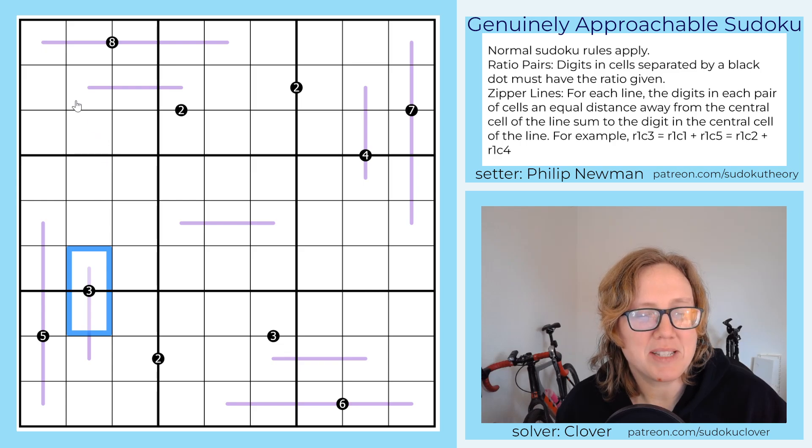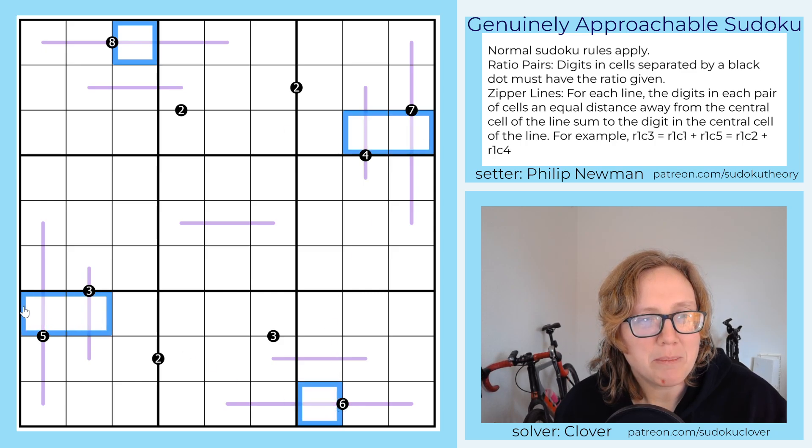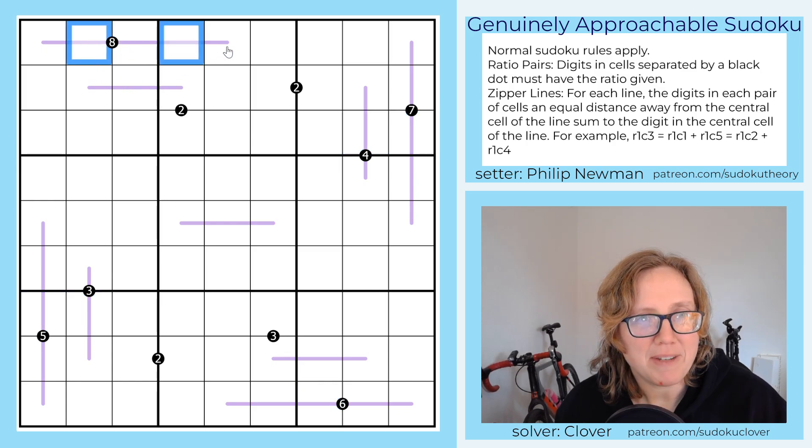And finally we have zipper lines. So there's some lines in the grid that are of odd length, and if you look at the central cell, whatever number goes into that central cell has to also equal the sum of each pair of digits that are the same distance away from it. So for instance, whatever goes here has to be the sum of these, and it also separately has to be the sum of these.